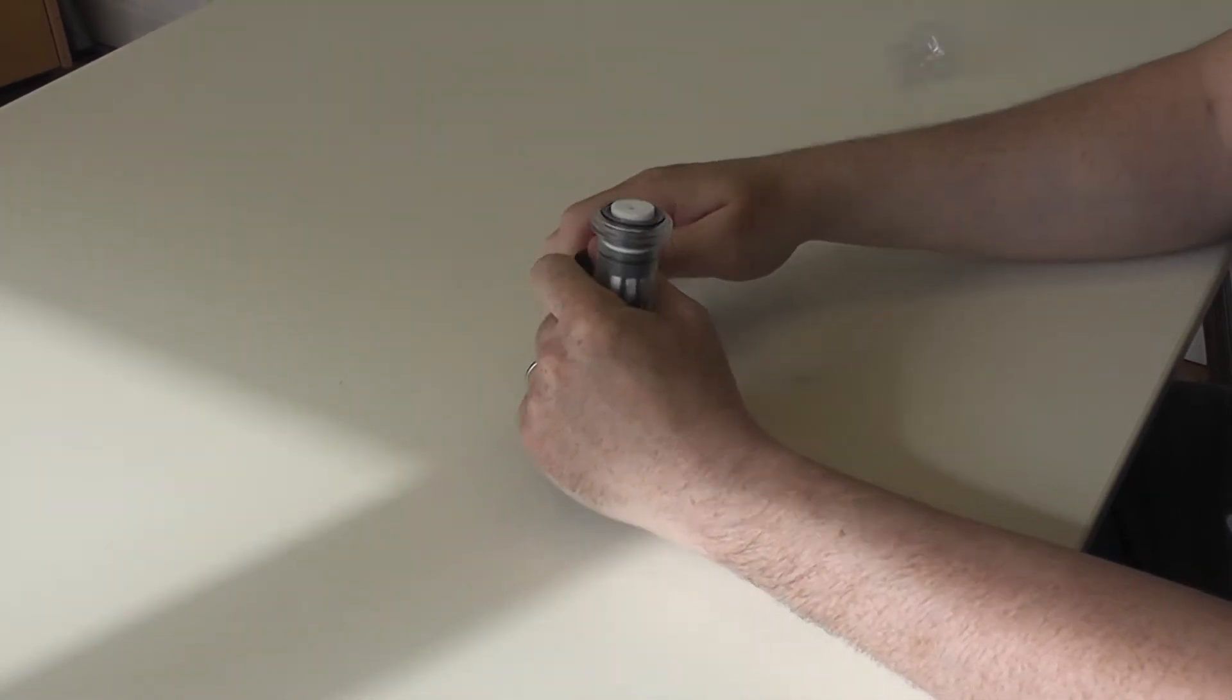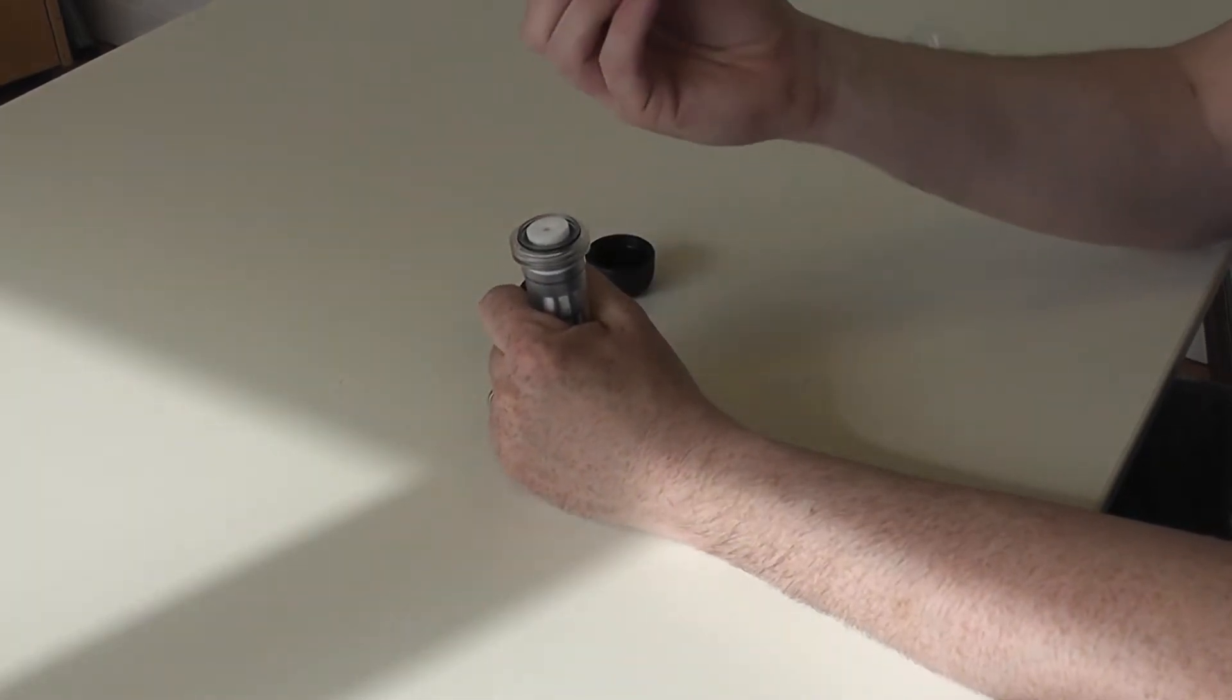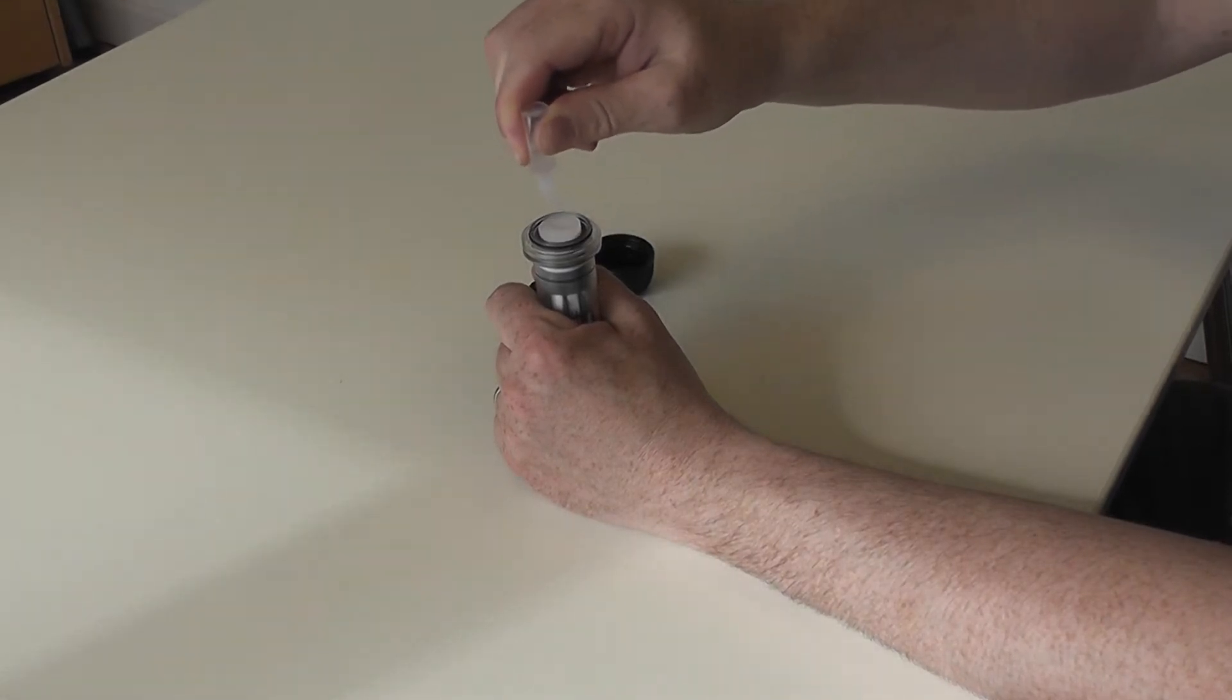Take one bottle of buffer and apply the full volume of buffer to the sampling sponge by squeezing the bottle. This may require more than one squeeze of the bottle.